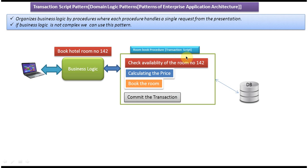This procedure or transaction script will contain steps to book hotel room number 142. First, we have to check if the room is available by checking in the DB whether it is booked by somebody else. If it is available, the steps return 'room is available.' Then we calculate the price for that room, the client pays, we book the room, update the database that the room is booked, and then commit the whole transaction.